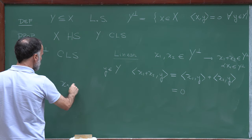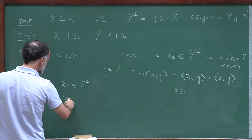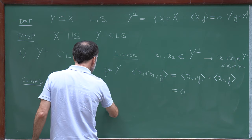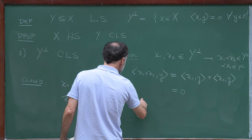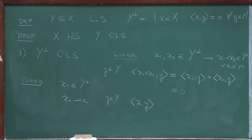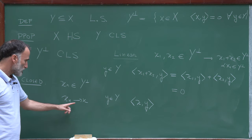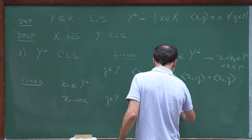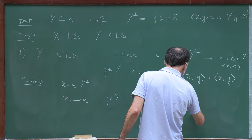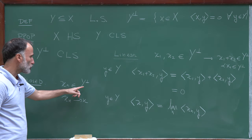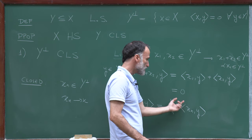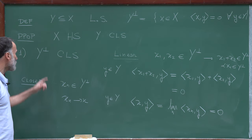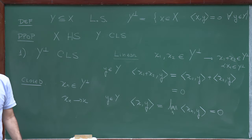That Y⊥ is closed is also simple. Consider a sequence Xn in Y⊥ converging to X; we want to show X belongs to Y⊥. Fix Y in Y. Then ⟨X, Y⟩ = lim ⟨Xn, Y⟩ by continuity of the scalar product. Since Xn belongs to Y⊥, each ⟨Xn, Y⟩ = 0, so the limit is 0. Therefore X belongs to Y⊥, proving Y⊥ is a closed linear subspace.